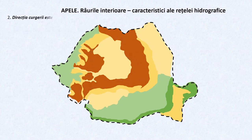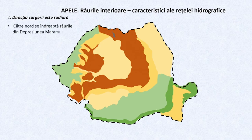În concordanță cu această dispunere și simetria unităților de relief, rețeaua de râuri a României s-a organizat în toate direcțiile, având direcția curgerii radiară.